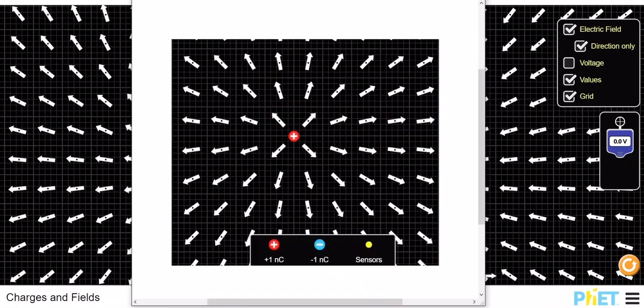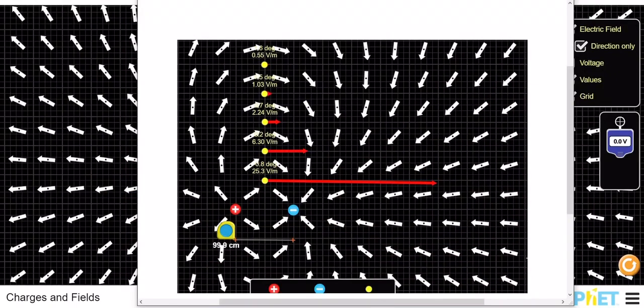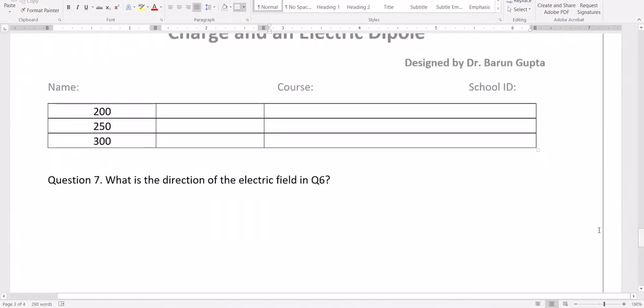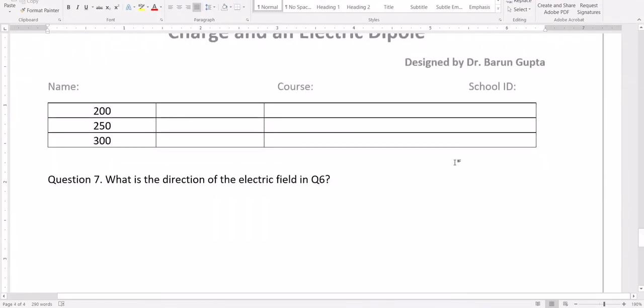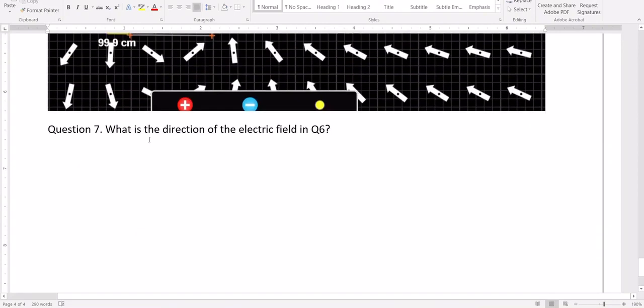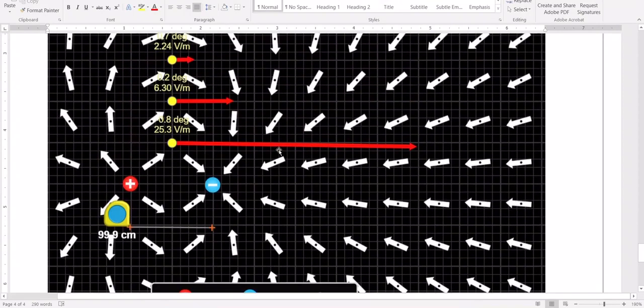Take a snapshot and paste it here. The next question asks: what is the direction of the electric field? The direction of the electric field is only along the horizontal direction. It does not have any component in the vertical direction.